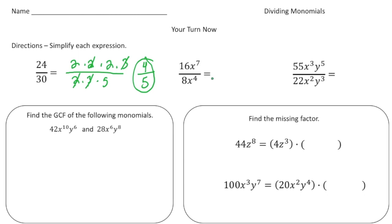The next one: reduce 16x to the seventh over 8x to the fourth. 16 divided by 8 is 2. And x to the seventh divided by x to the fourth — when you have monomials with common bases, you subtract the exponents — so that's x to the third.